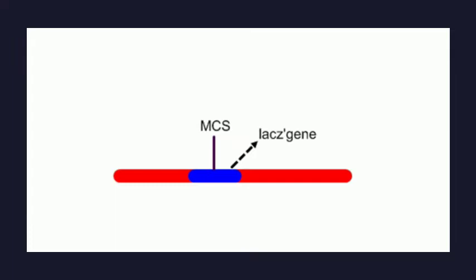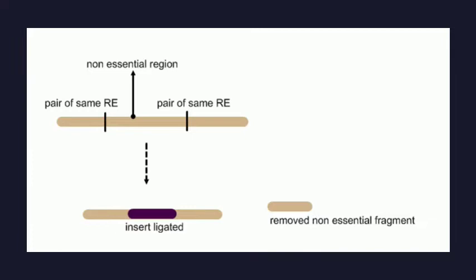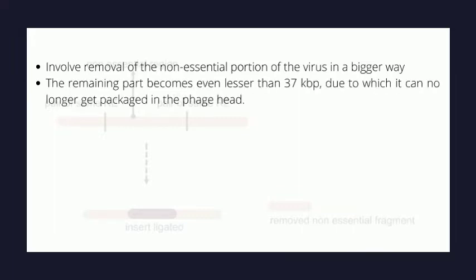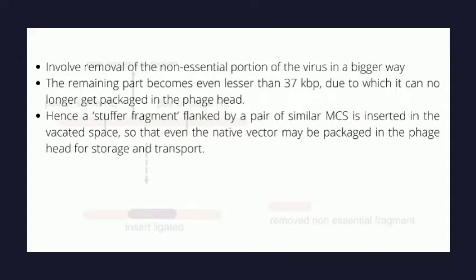Lambda replacement vectors involve removal of the non-essential portion of the virus in a bigger way. The remaining part becomes even less than 37 kbp in size, due to which it can no longer get packaged in the phage head. Hence, a stuffer fragment flanked by a pair of identical MCS on both sides is inserted in the vacated space so that even the native vector may be packaged in the phage head.